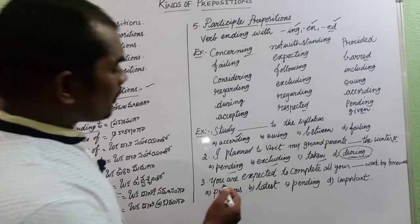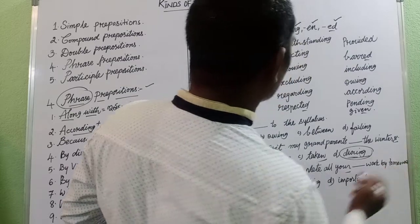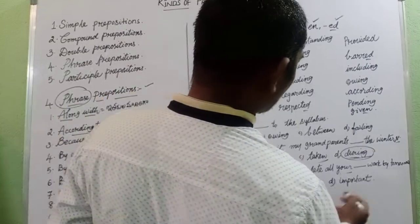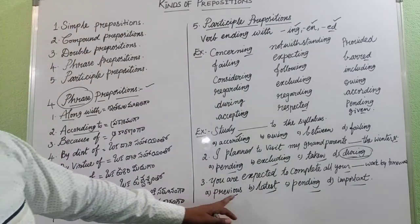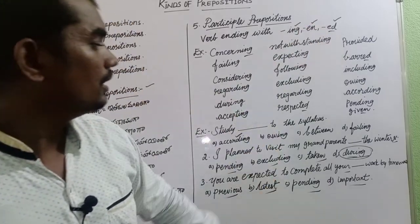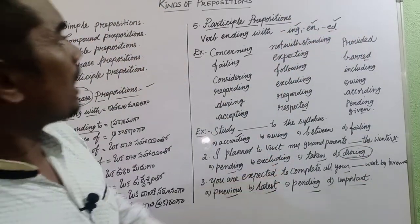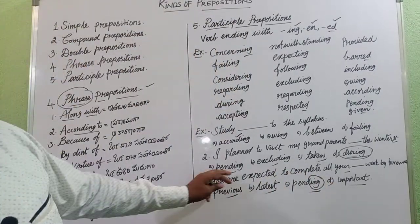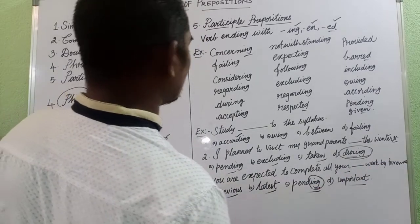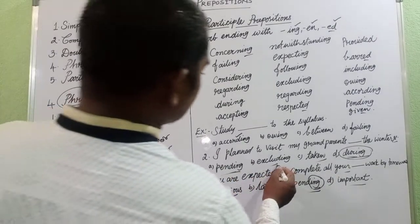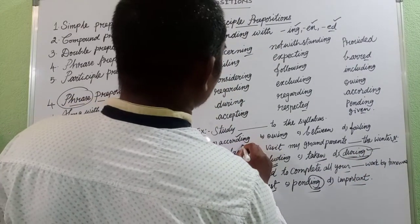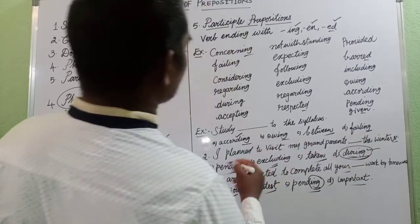Third example: 'You are expected to complete all your dash work by tomorrow.' The options are: previous, latest, pending, or important. The answer is 'pending' because it ends in '-ing,' making it a participle preposition — 'You are expected to complete all your pending work by tomorrow.'